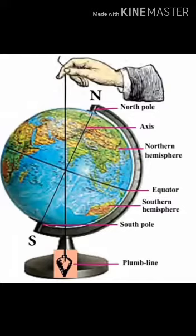The imaginary circle which is the equator divides the Earth into two equal parts that is the Northern Hemisphere and the Southern Hemisphere.